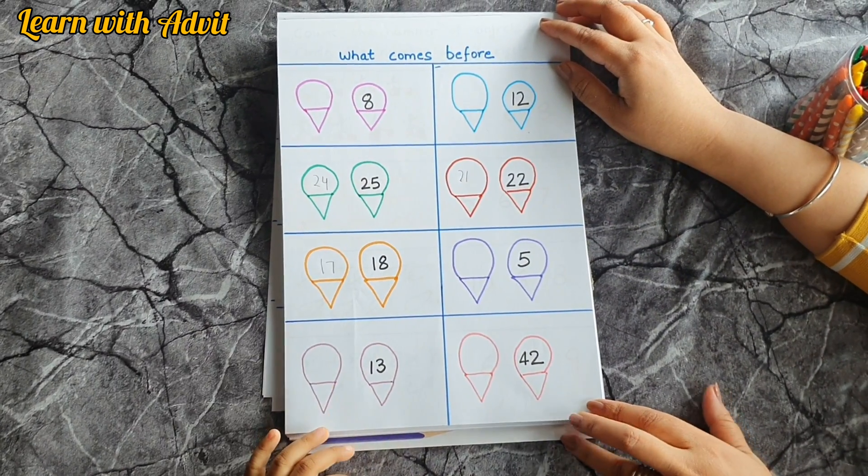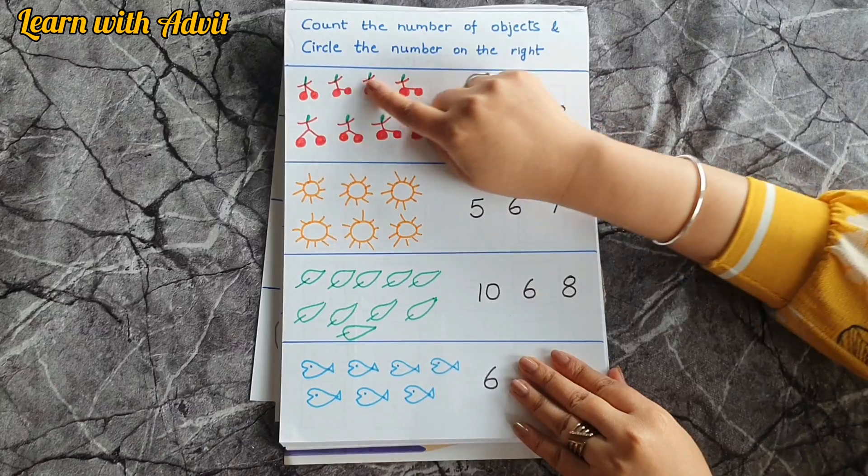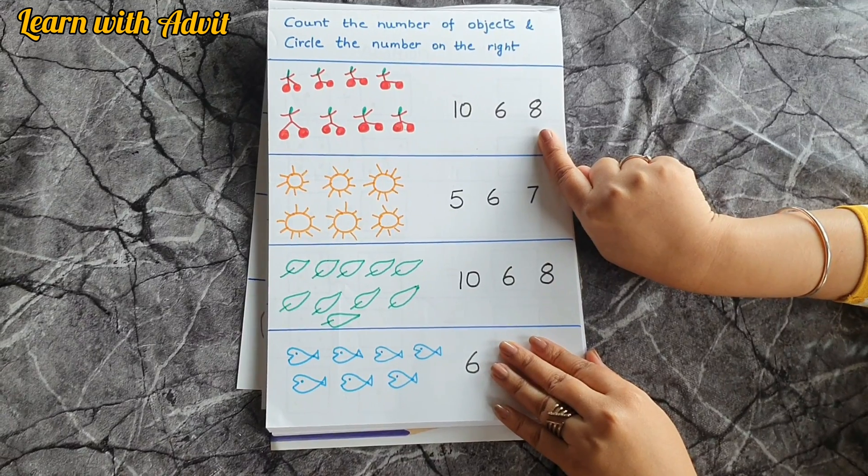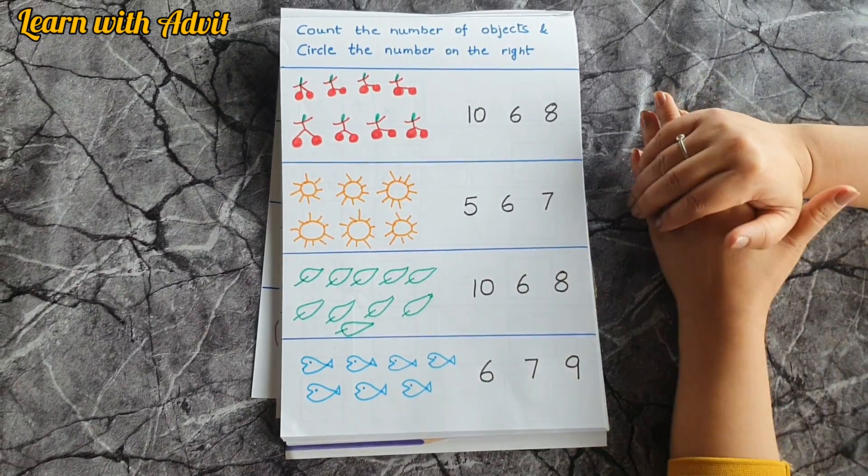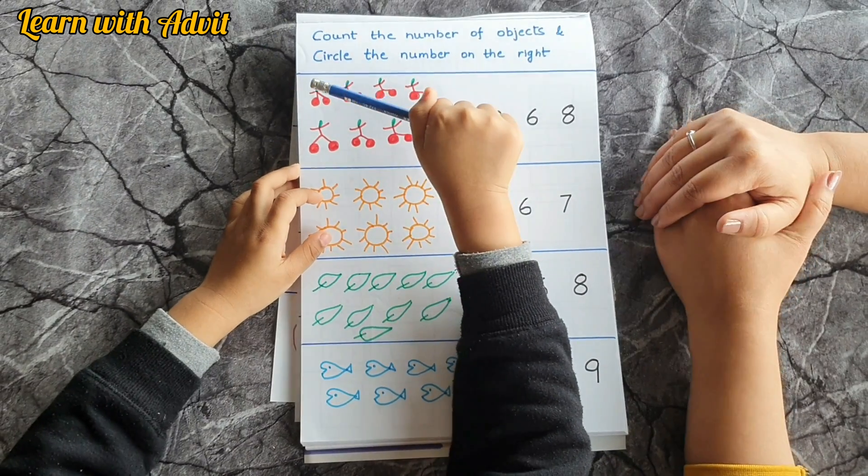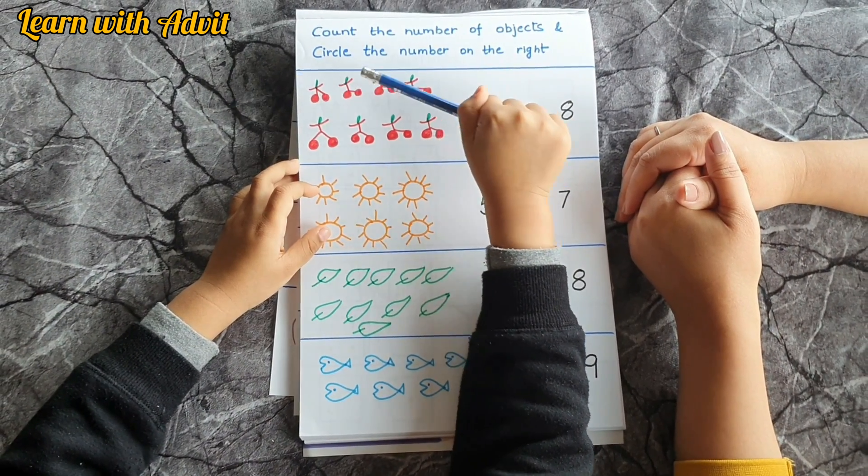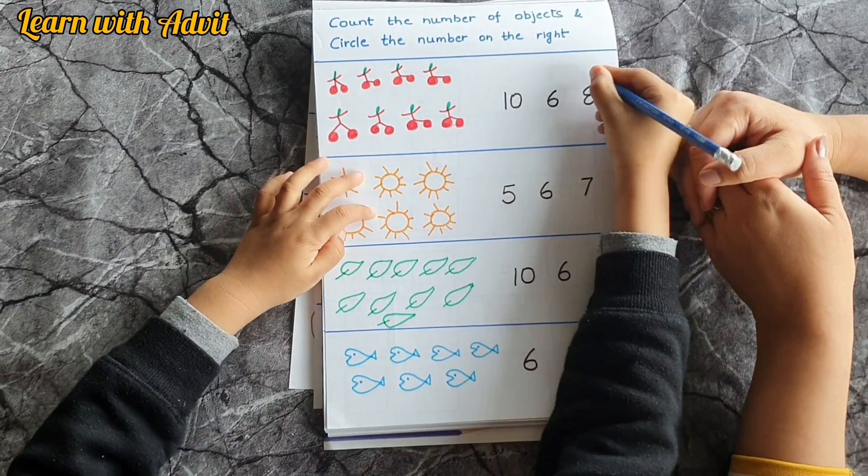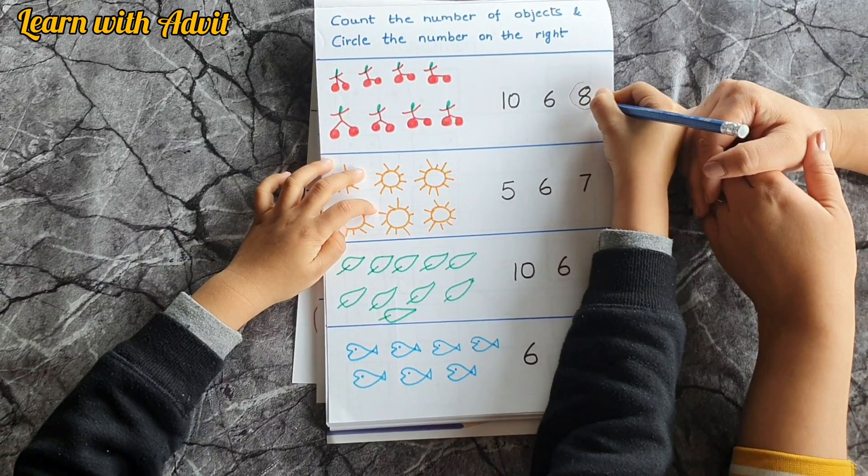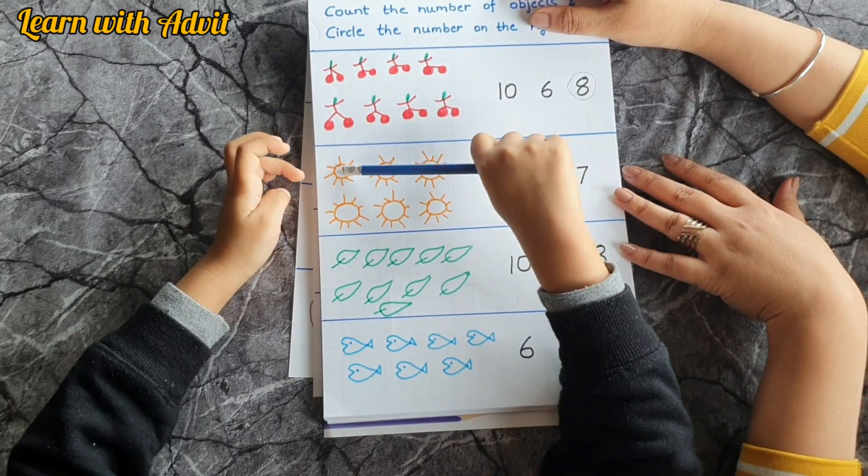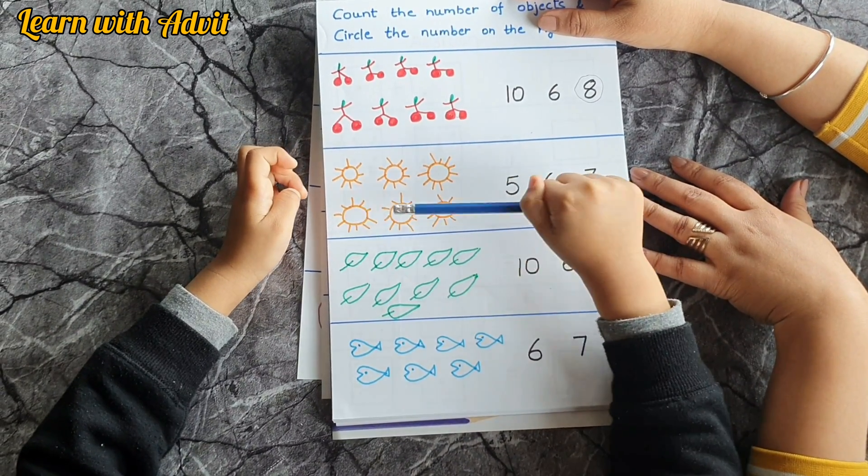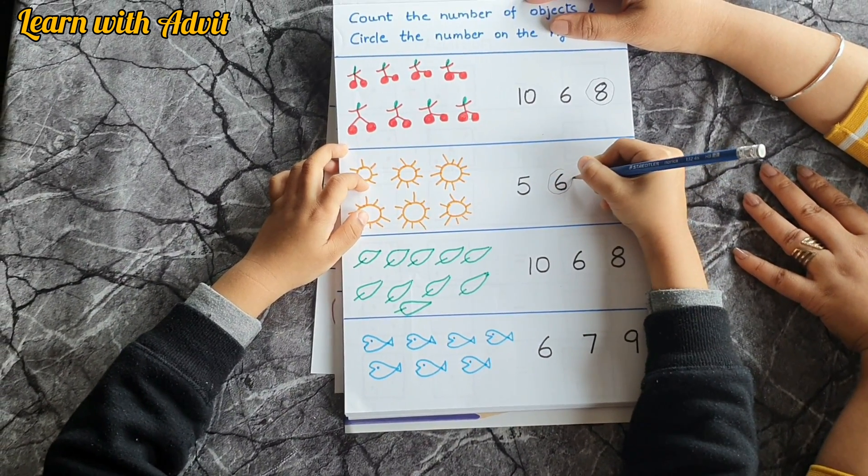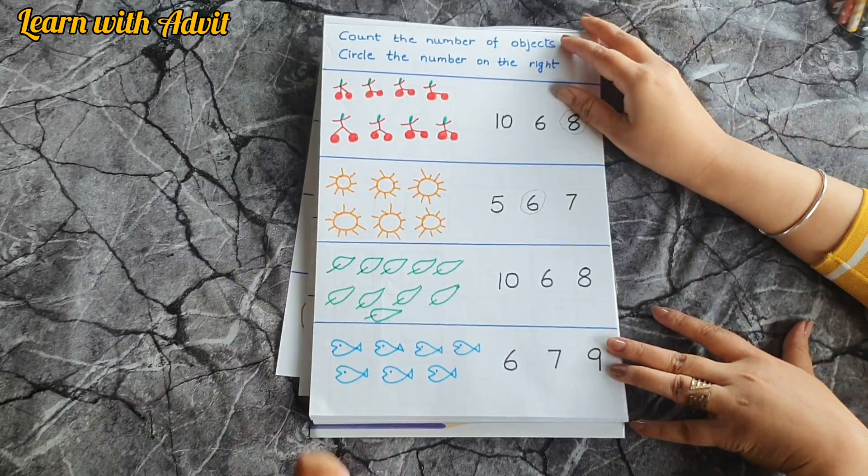Very good. In this sheet, what you have to do, you have to count all the pictures, how many of their objects, and you have to write the correct number. Yes, circle. How many cherries? One, two, three, four, five, six, seven, eight, very good. Number eight. One, two, three, four, five, six, six. Very good. Count the leaves.